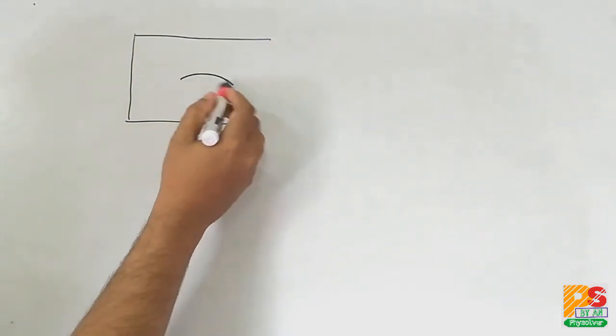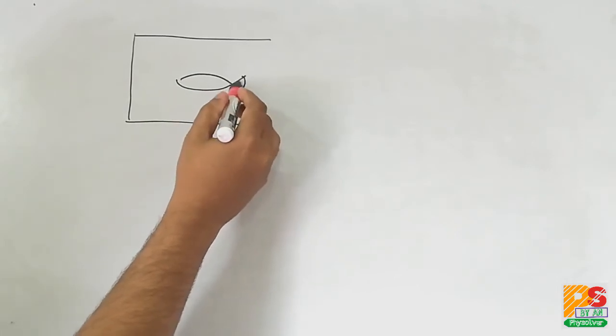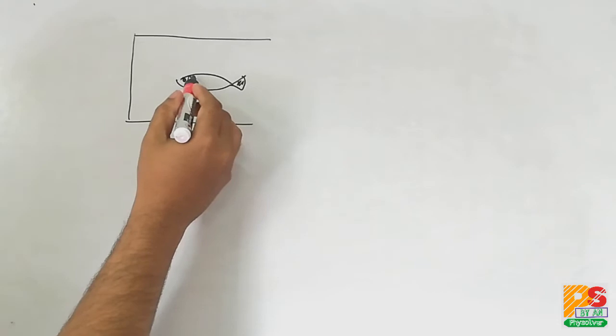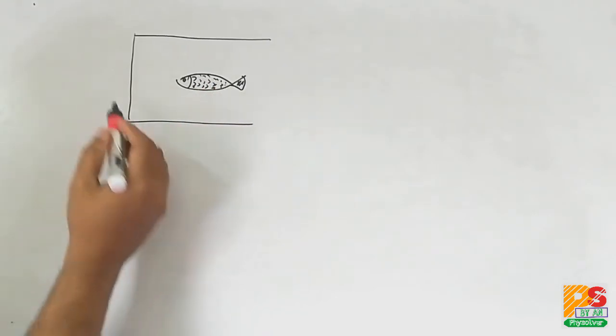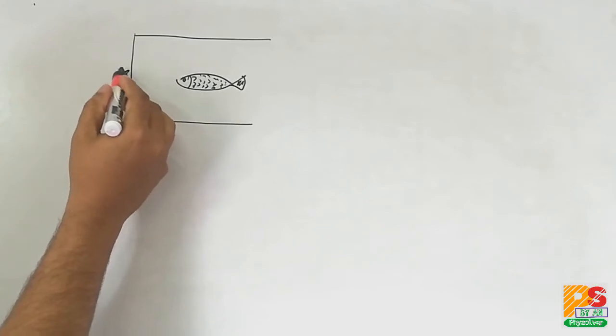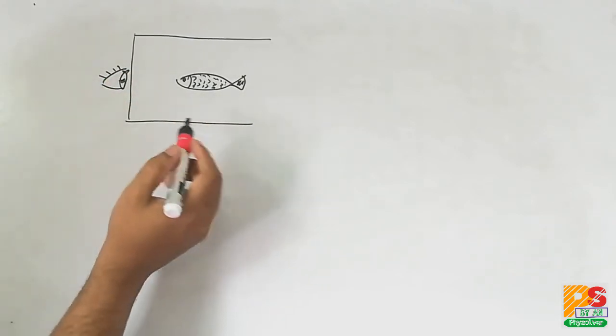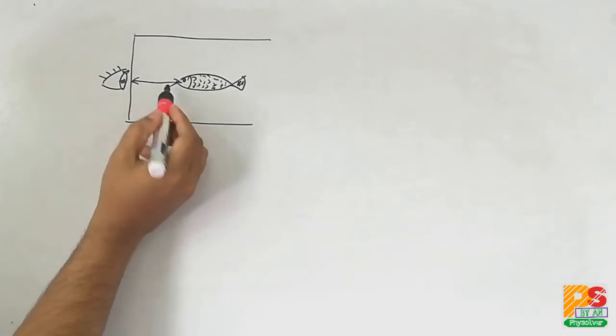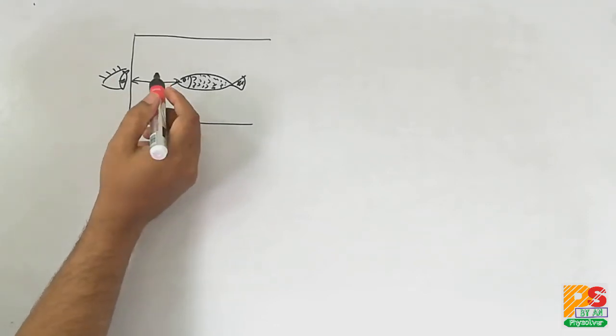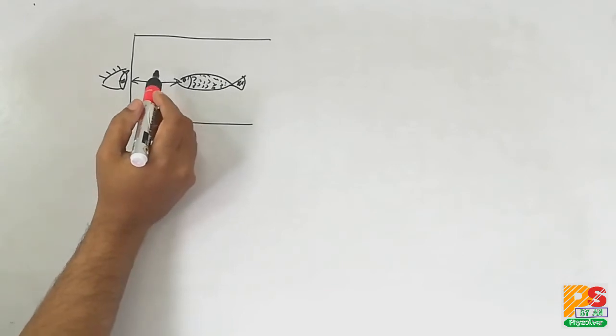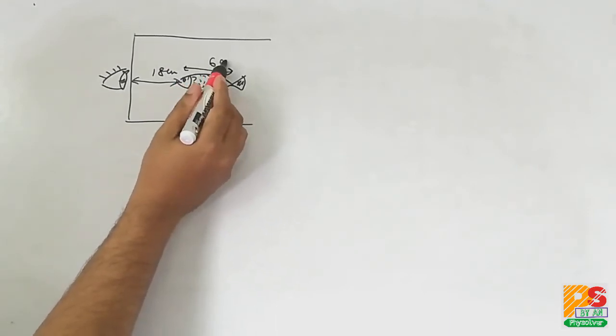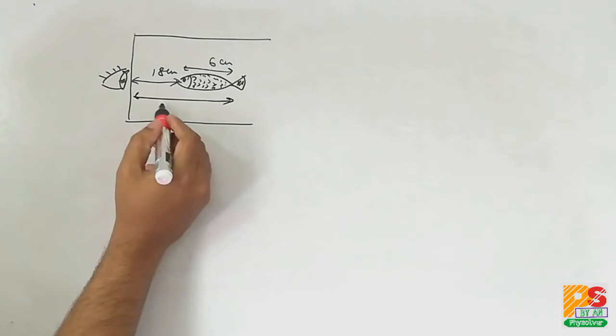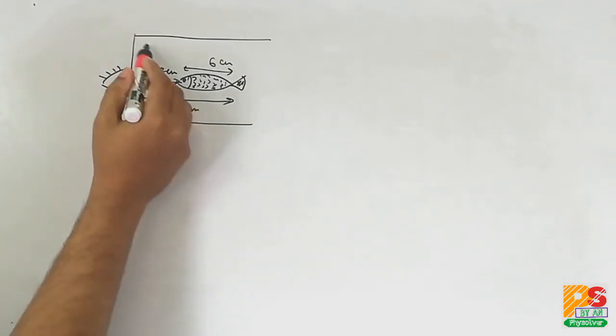This is the aquarium and the fish. The thickness of the glass front can be neglected. The head of the fish is 18 centimeters behind the glass front. The length of the fish is given as 6 centimeters, therefore the distance of the tail is 18 plus 6, that is 24 centimeters.